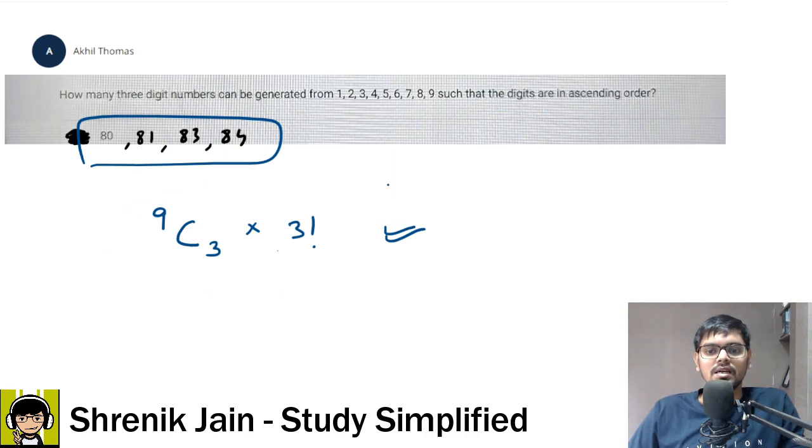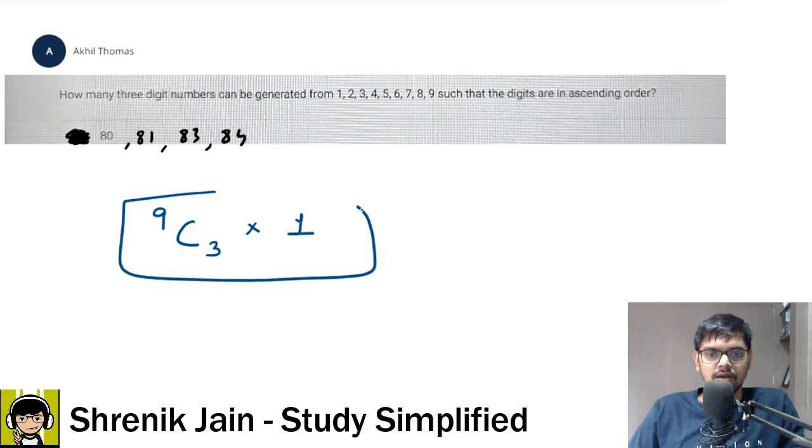Now this is not what your ascending order looks like. So what is the right answer? The right answer is you have to multiply into one. That is the right answer. Now your doubt is why this one, why not three factorial? Let me explain.